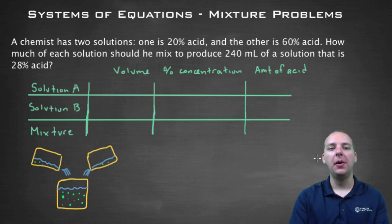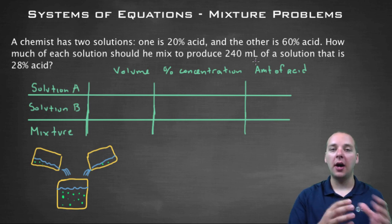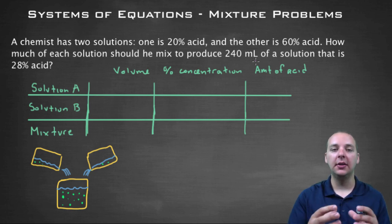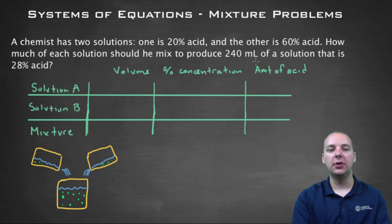We've got some information: volume of all these different solutions A, B, and the mixture; how concentrated they all are, 20%, 60%, and then the mixture is 28%. And then that's going to give us the volume of acid based off of the different concentrations. So let's see if we can fill in this chart, and we'll see how we can get a system out of this thing that hopefully we can ultimately solve to answer their question.